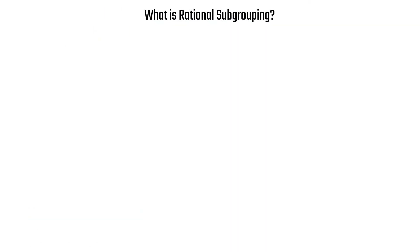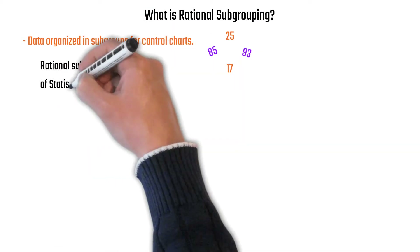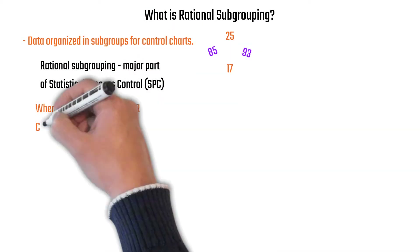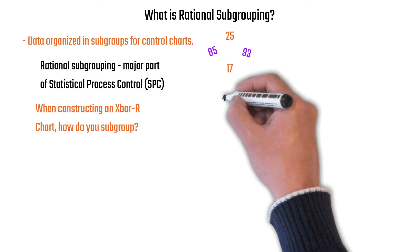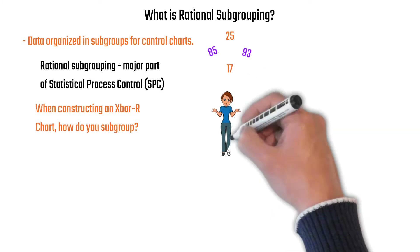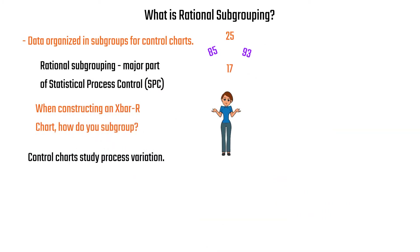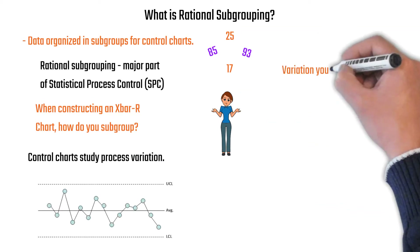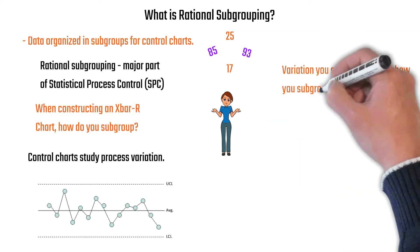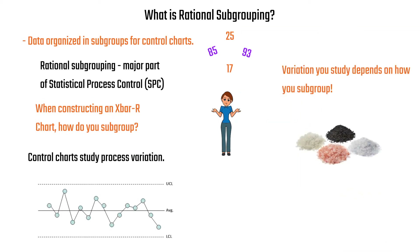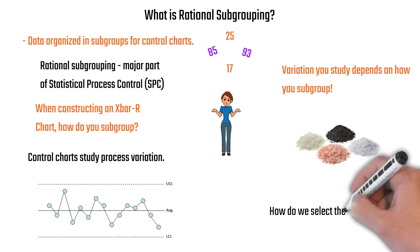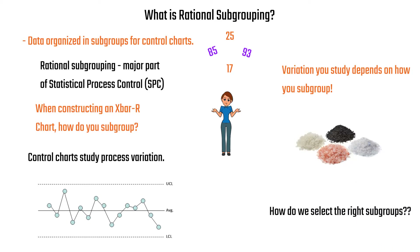So what is rational subgrouping? When you make an X-bar and R-chart, you take your data and form subgroups. Rational subgrouping plays a major part in SPC. How do you subgroup the data when you're doing an X-bar and R-chart? Remember, control charts study process variation, and the variation you study depends upon how you subgroup.